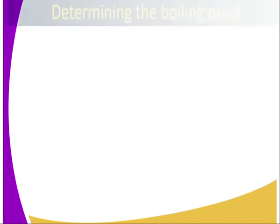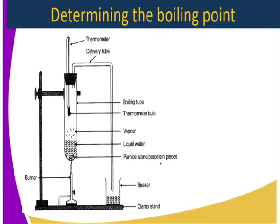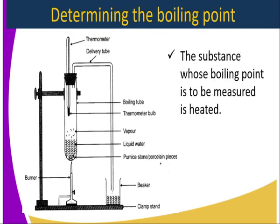To determine the boiling point, we use the setup as illustrated. The substance whose boiling point is to be measured is heated in a boiling tube containing a liquid — for instance, water. We also have pumice pieces or stones to absorb some of the heat and prevent the boiling tube from breaking due to heat. Once the liquid is heated, it changes its state to gas.